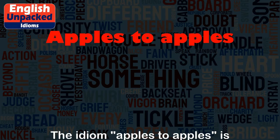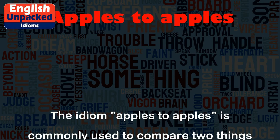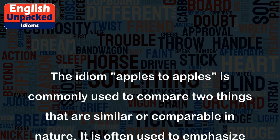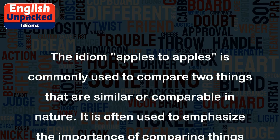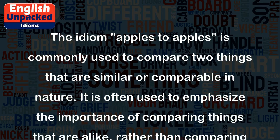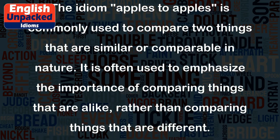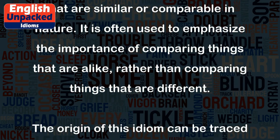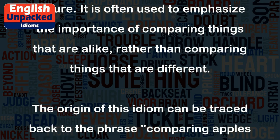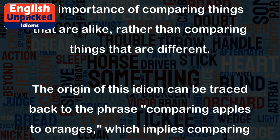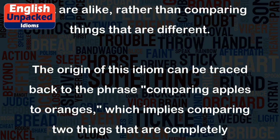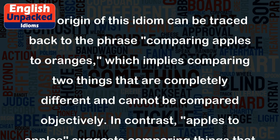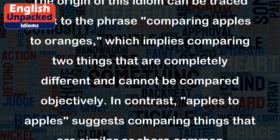Apples to Apples. The idiom 'apples to apples' is commonly used to compare two things that are similar or comparable in nature. It is often used to emphasize the importance of comparing things that are alike, rather than comparing things that are different. The origin of this idiom can be traced back to the phrase 'comparing apples to oranges,' which implies comparing two things that are completely different and cannot be compared objectively.